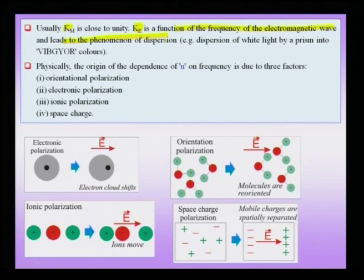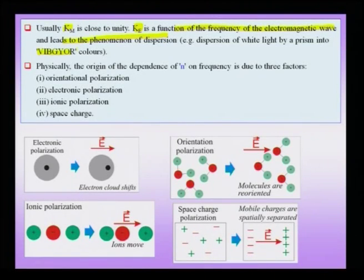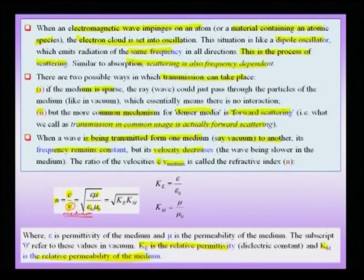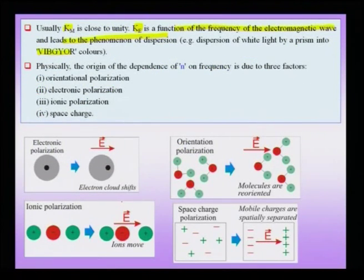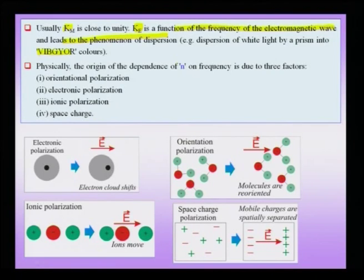The phenomenon of dispersion tells us that the refractive index n is a function of frequency, and this dependence of n comes from K_e because K_m is essentially close to unity. Physically, the frequency dependence of n comes from four factors: orientation polarization, electronic polarization, ionic polarization, and space charge polarization. We are referring to a dielectric medium where polarization is possible and light is passing through some medium like quartz or another crystalline medium.